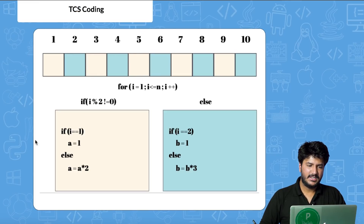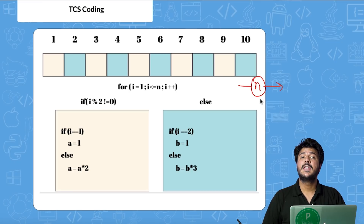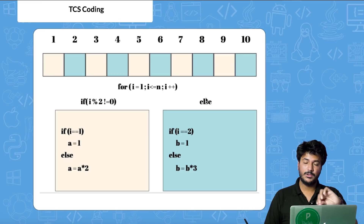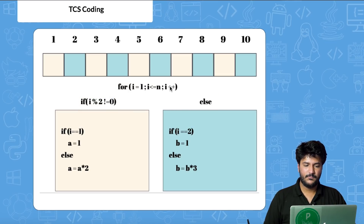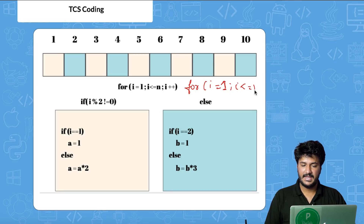We declare a variable n and take input from the user — which position's value do they want to print? If they want the 11th value, they enter 11, which gets stored in n. We then run a for loop: for i = 1; i <= n; i++. This iterates through all positions up to n.